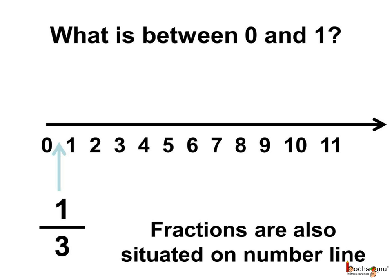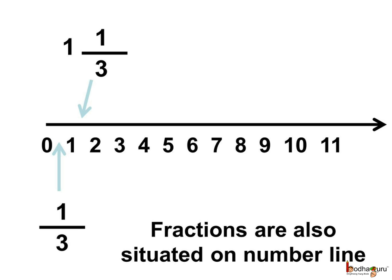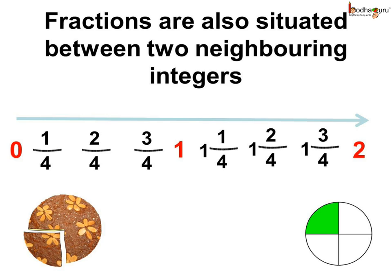Same way, 1 1 third is situated between 1 and 2 as 1 1 third is more than 1 but less than 2. Thus, fractions are also situated between the two neighbouring integers, say between 0 and 1 and we have 1 by 4, 2 by 4, 3 by 4, etc.